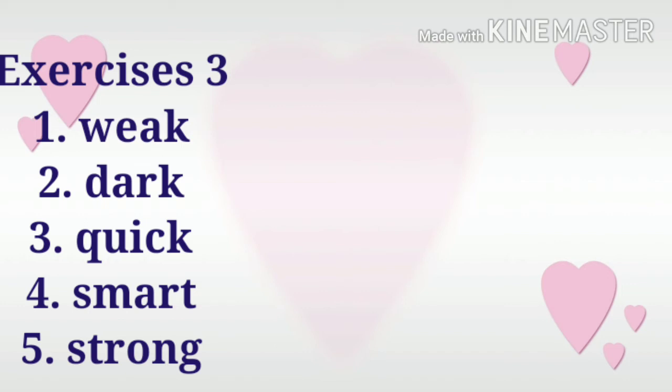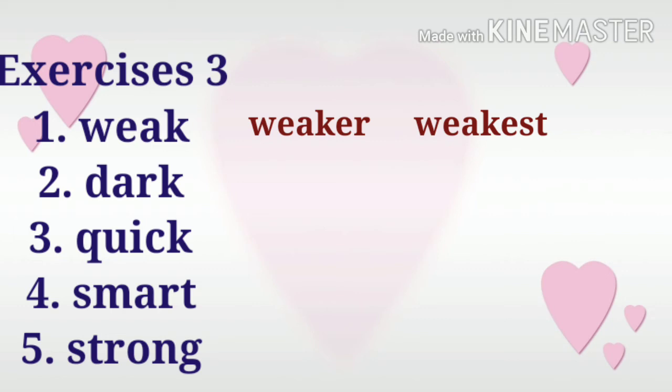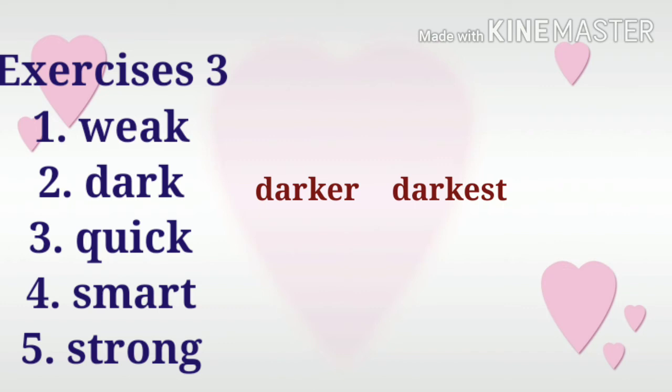Number one word is weak. What's the comparative degree of the word weak? Weaker — we add ER at the end of the word weak. How about in the superlative degree? It becomes weakest — we add EST at the end of the word weak. So: weak, weaker, weakest. Let's now move to number two: dark. In the comparative degree, we add ER, so the word is darker. In the superlative degree, it becomes darkest — we add EST at the end of the word dark. So: dark, darker, darkest.